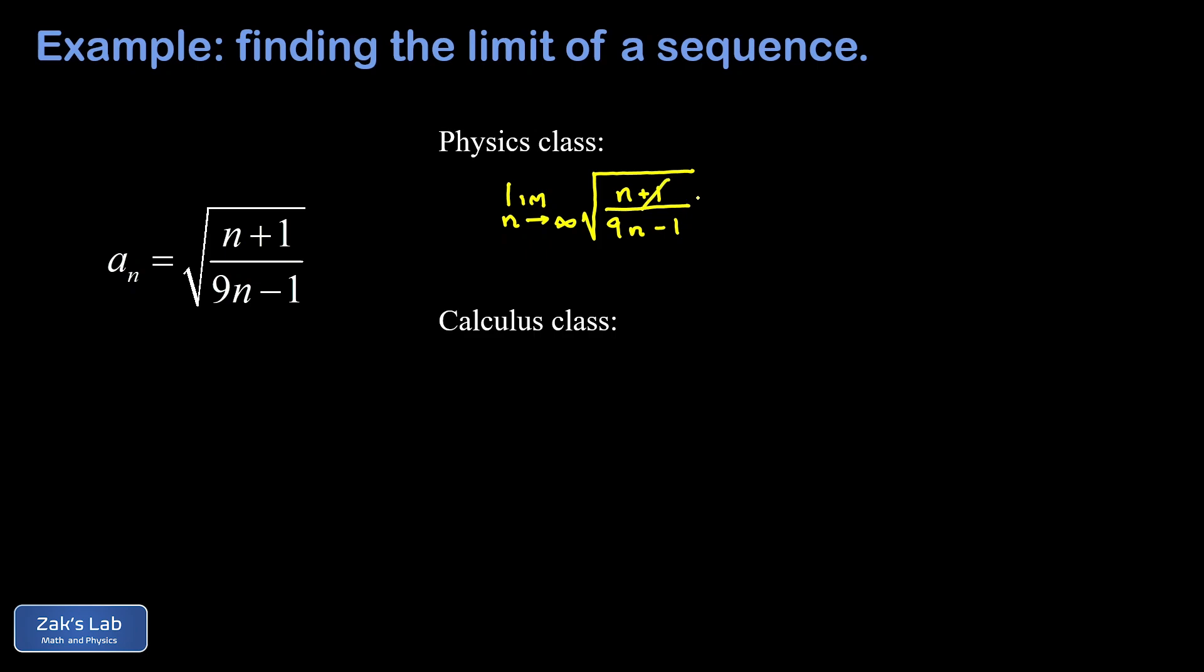I immediately say oh the one is negligible by comparison. Similar in the denominator, 9n minus 1, the minus 1 is negligible by comparison to this term that's growing to infinity. And I've immediately simplified the interior of the square root to n over 9n. Well there's a common factor of n there that I can cancel out and I end up with the square root of 1/9th. And when I take the limit of a constant I just get the constant, so I have square root of 1/9th which then simplifies to 1/3rd. Easy breezy and we're done.